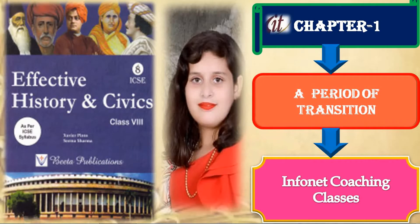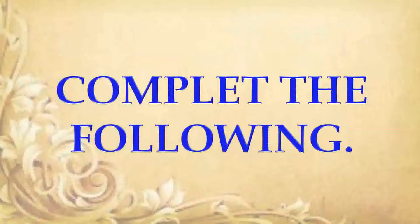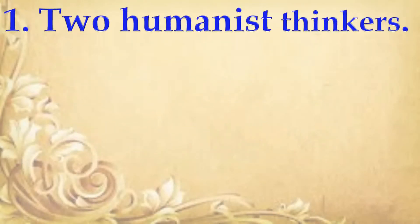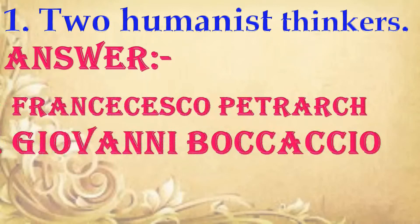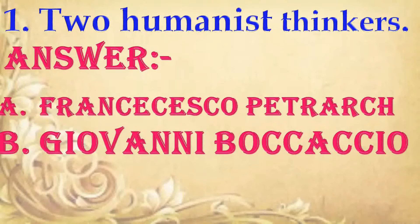Hello friends, welcome to Internet Coaching Classes. Today we are going to discuss History and Civics Class 8, Chapter 1: A Period of Transition. Complete the following: two humanist thinkers. Answer: Francisco Petrarch and Giovanni Boccaccio.